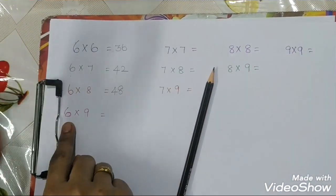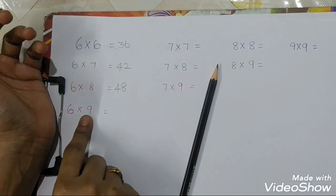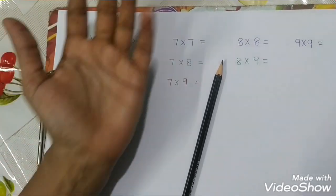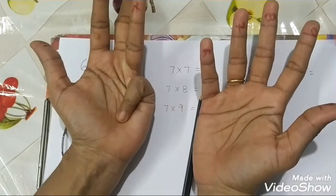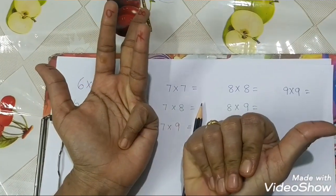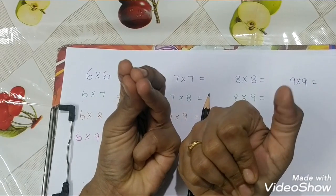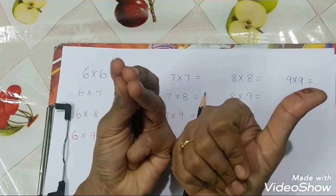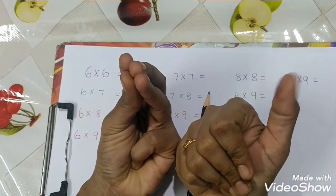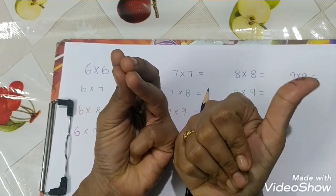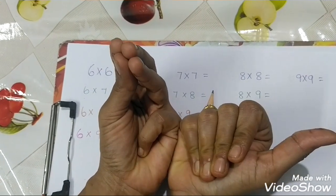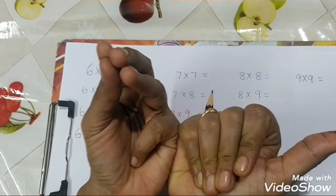For 6 times 9: show fingers 6 and 9. The closing finger value gives 50. Open fingers are 4 and 1. So 4 times 1 equals 4. Then 50 plus 4 equals 54. So 6 times 9 are 54.